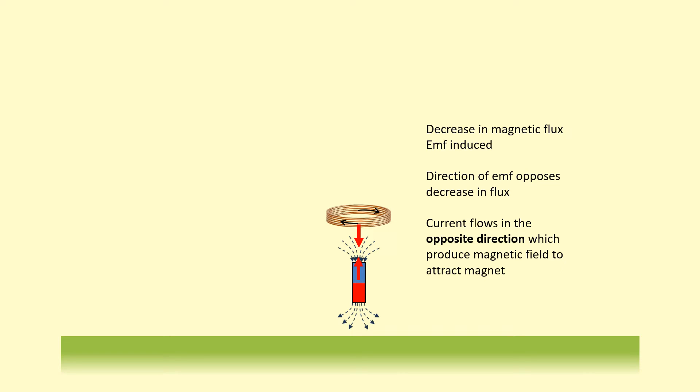So this current that's flowing is actually producing a magnetic field. And the coil of wire is acting like a magnet. Now with the north pole at the bottom, trying to attract the magnet back up. The magnet will still accelerate downwards. But again, not at minus 9.81, but less.